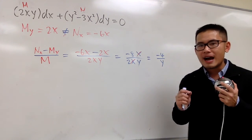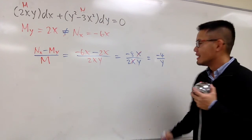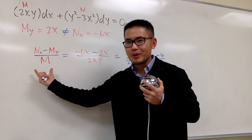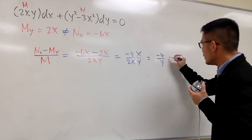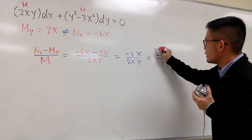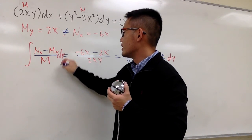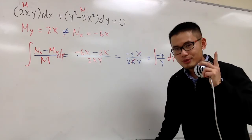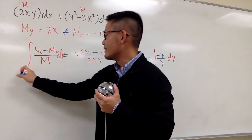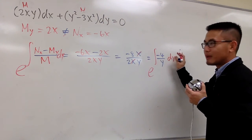We worked this out and we have an expression in terms of just y. That means we can find a special integrating factor in terms of just y. This is just the ingredient itself — I will have to integrate this with respect to y. And don't forget, this result goes in the exponent of e, so it's e to that power.